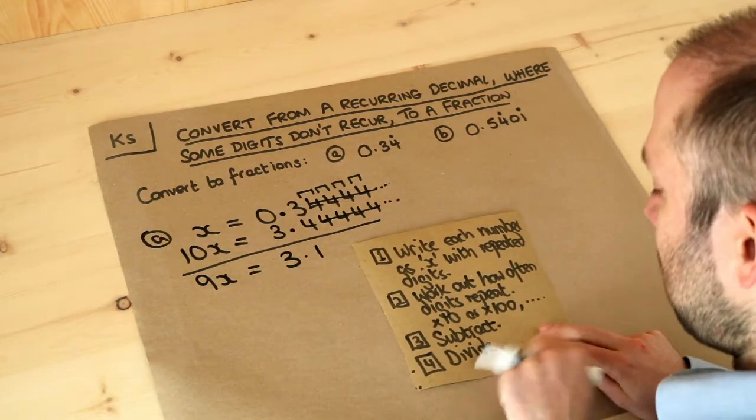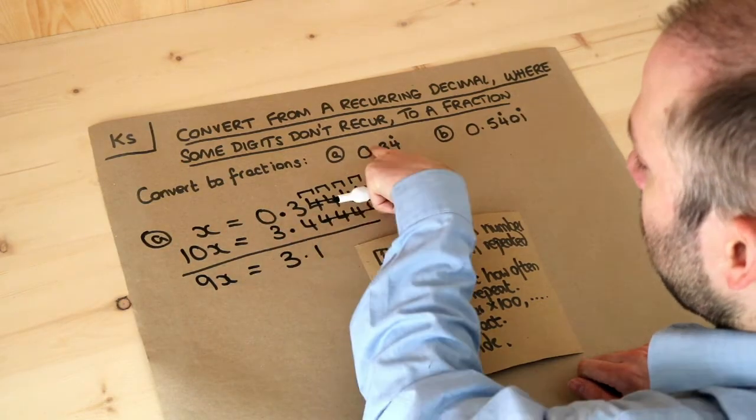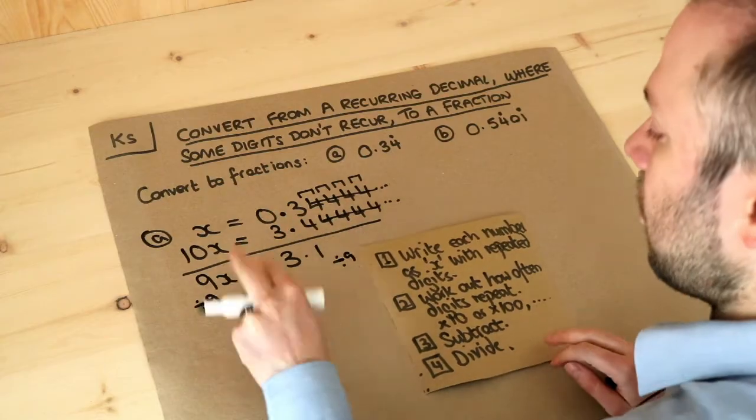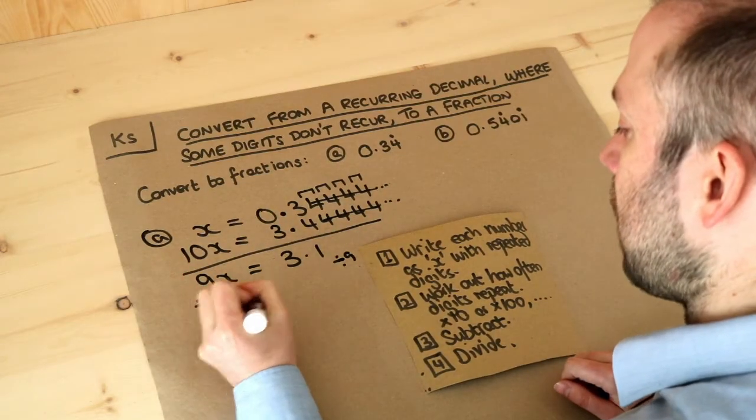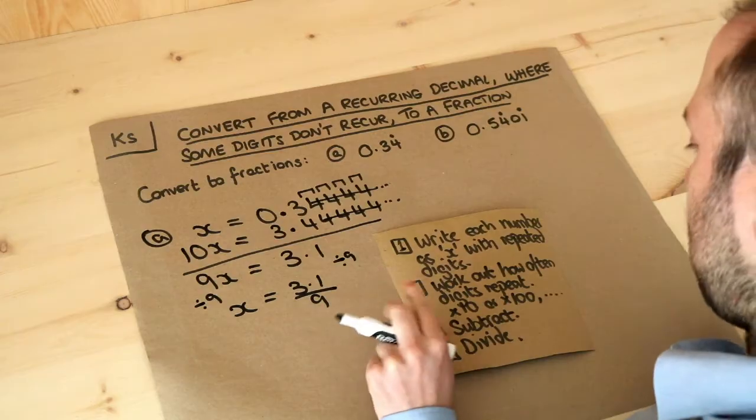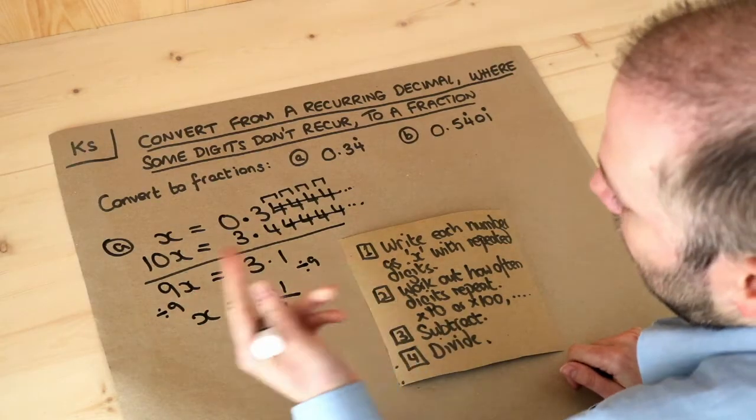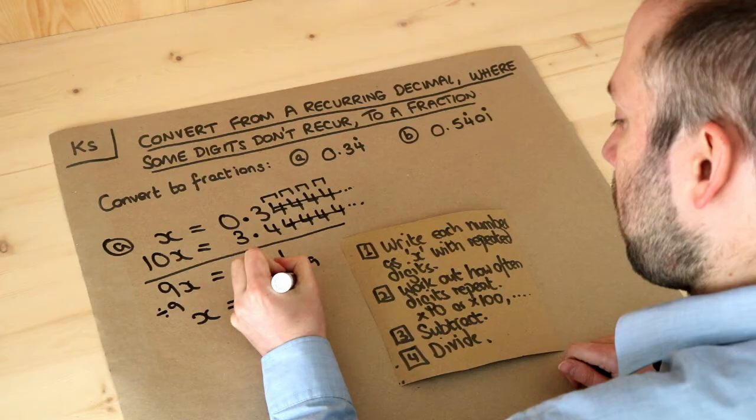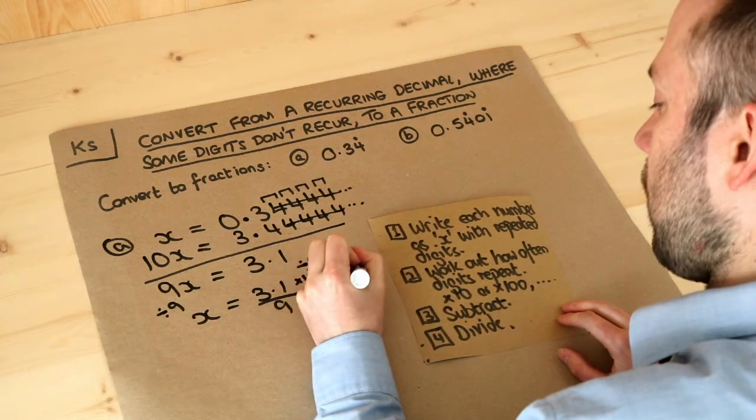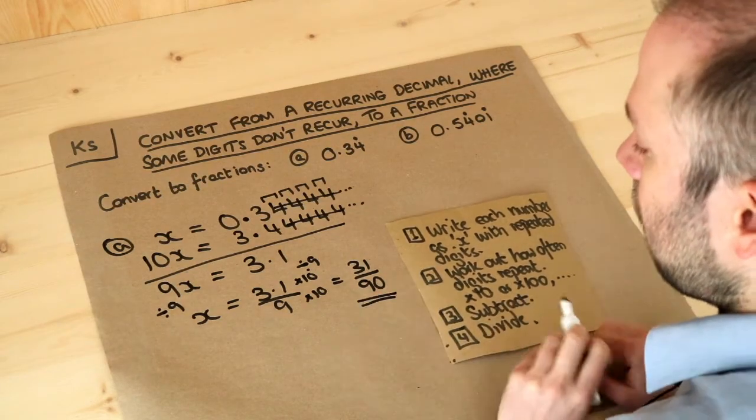And the final step is to divide. We've got 9x at the moment. We want to work out what x is because x is the original number, x is the 0.34 recurring which is what we've got here. So we need to get rid of that times by 9. So we divide both sides by 9. So 9x divided by 9 is just x. And then we're going to have 3.1 over 9. Now at the moment this is not a nice answer because we don't like decimals in fractions. So if we multiply top and bottom by 10 that's going to get rid of this decimal point because 3.1 times by 10 is just 31, and 9 times 10 is 90. Now this fraction doesn't simplify any further so that is the final answer.